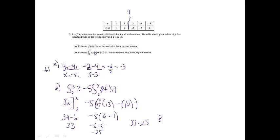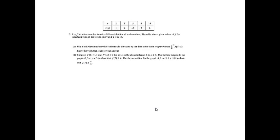If you used the fundamental theorem of calculus, took the integral, and evaluated it at its endpoints and showed that, you're going to get a point. And if you got the answer of 8, you're also going to get another point. Part C: Use a left Riemann sum with subintervals indicated by the data in the table to approximate the integral.